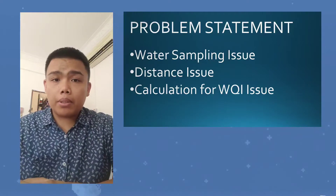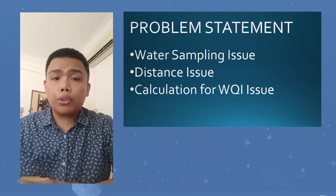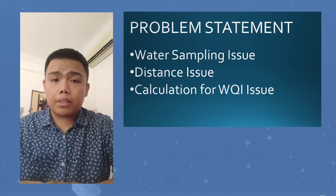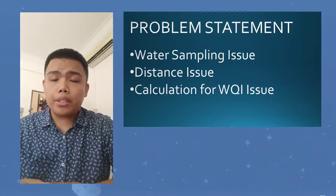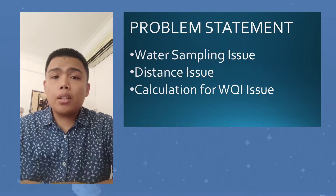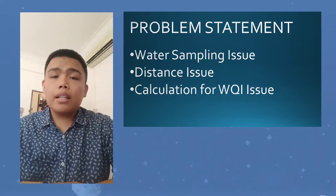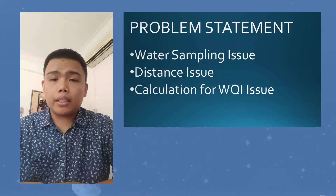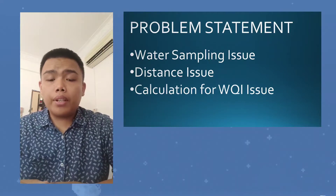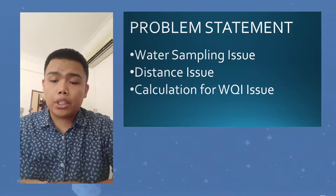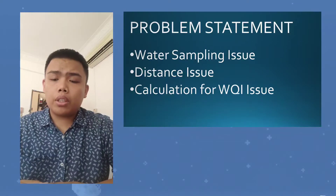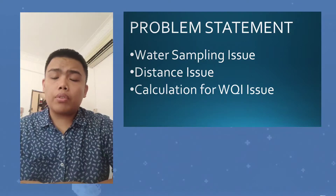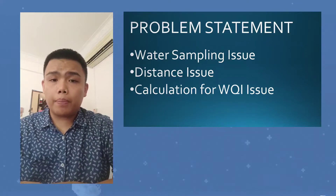The ideal time for the samples to get from the field research area to the laboratory is around 4 to 24 hours after the samples are taken. The longer the sample is exposed to different temperatures and surroundings, the more incorrect it will come out. The last issue is the calculations for WQI. Students find it very challenging to understand the different calculation procedures as they have to refer to different kinds of WQI standards and formulas.